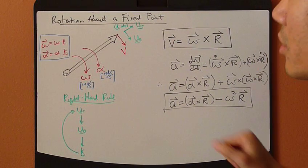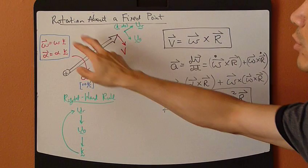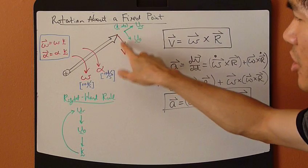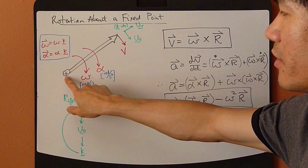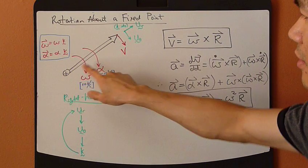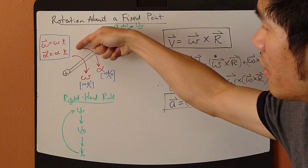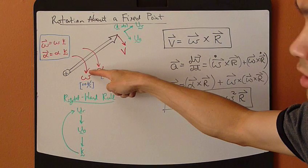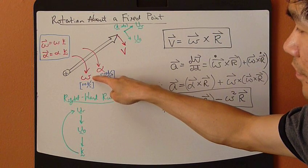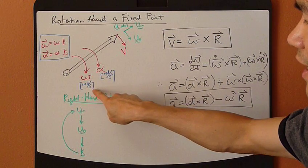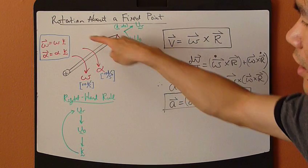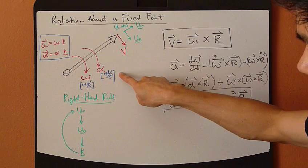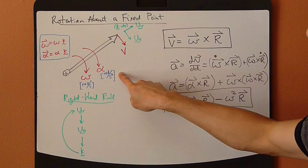Let's continue with the discussion about a rigid body rotating about a fixed point. This rigid body may have an angular velocity, omega, having a unit of radians per second. It could also have an angular acceleration, having a unit of radians per second squared.